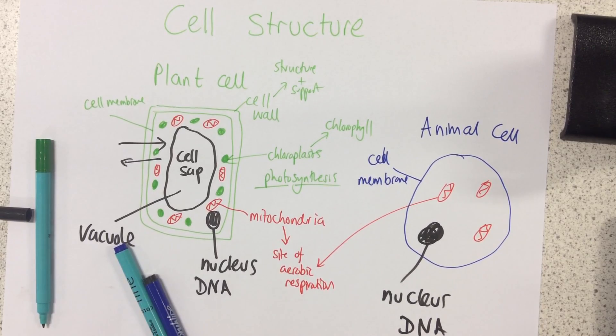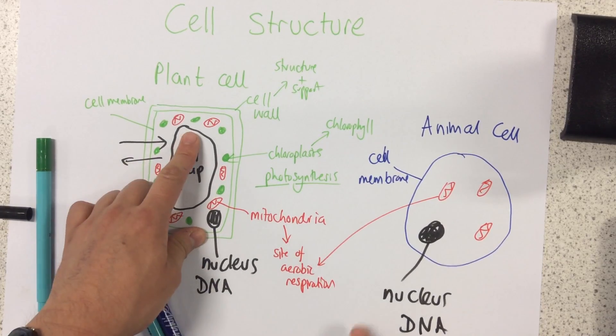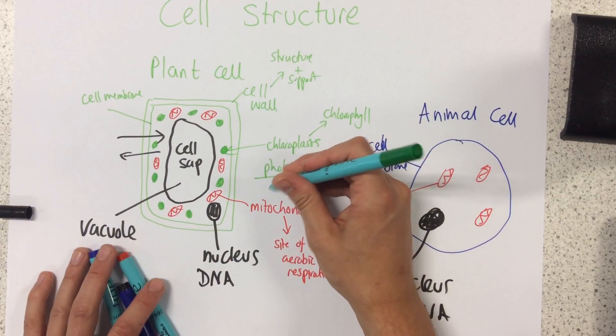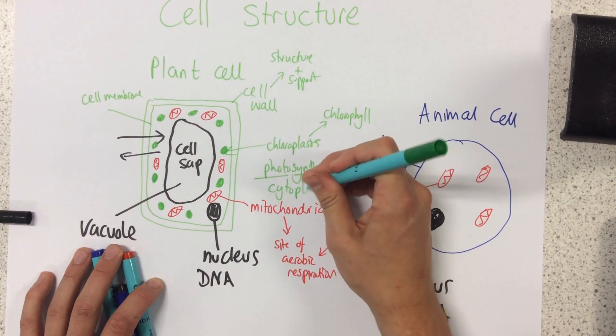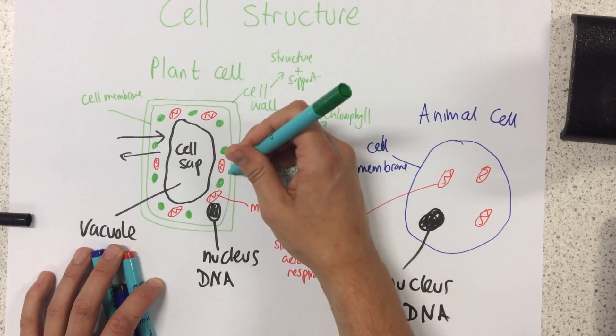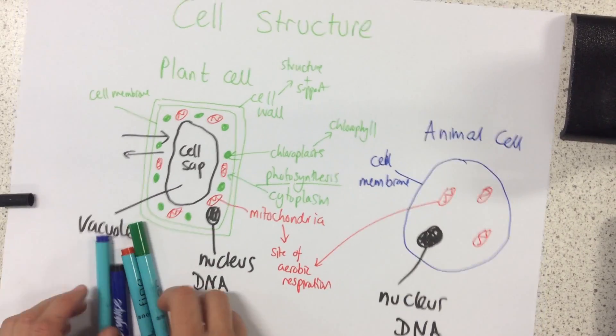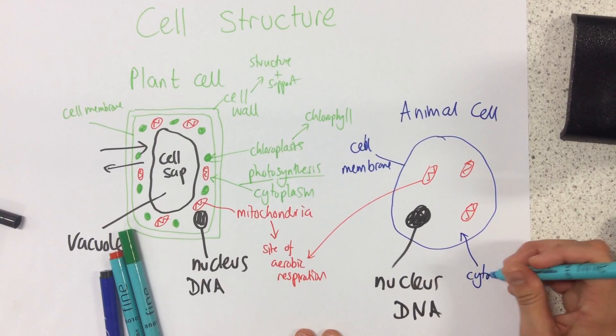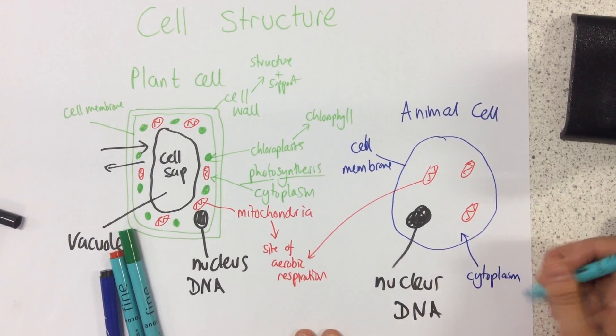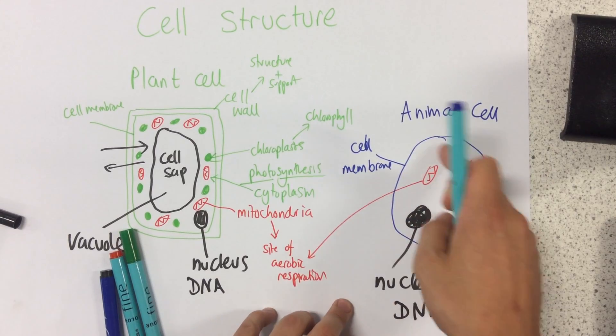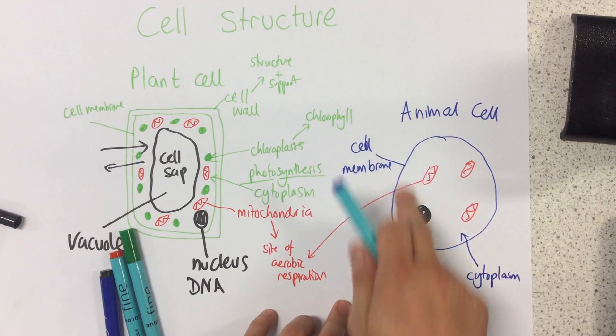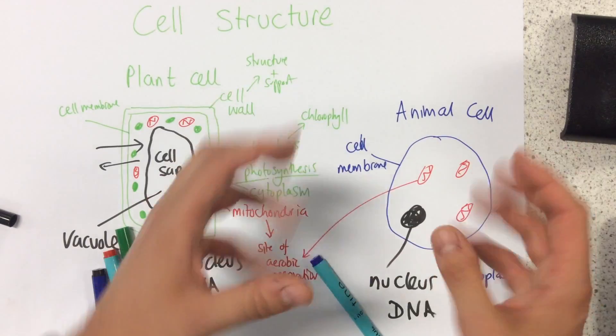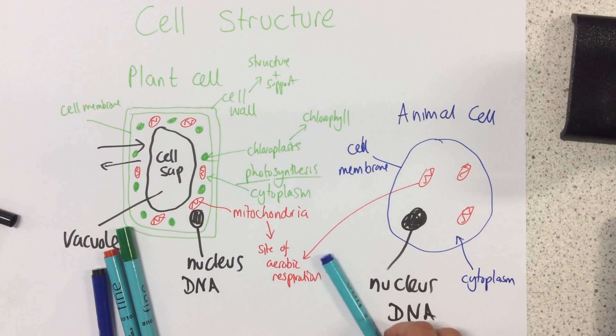Now I've just realized I've forgotten one feature from here which is also in animal cells. They both contain something called the cytoplasm. Now what the cytoplasm is, is it's the jelly-like substance within cells where loads of chemical reactions take place. It's this jelly-like substance which all of these other organelles are kind of suspended within. Loads of chemical reactions happen there.